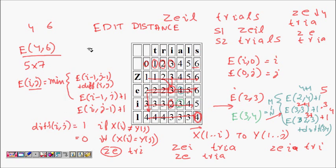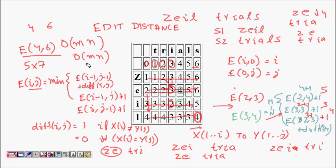Regarding time complexity: we create a table of O(m×n), where m is the length of the first string and n is the length of the second. We use two for-loops — one from 1 to m and another from 1 to n — so the total time complexity is O(m×n). This algorithm is asked quite frequently in interviews.